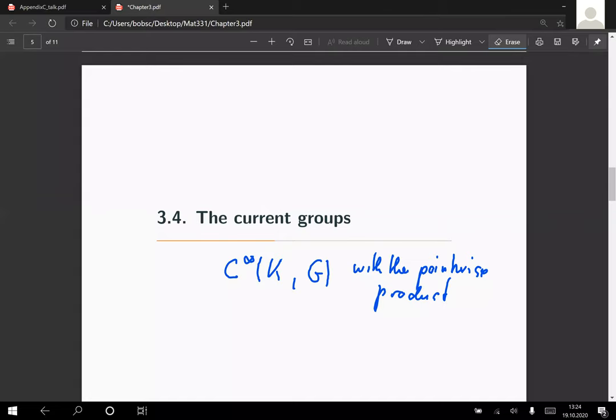We have constructed current groups using this trick by Bobaki, which allows us to construct first the local structure and then extend it to everything. The current group was the group of smooth mappings from K with various Lie group where the product was given by pointwise one.